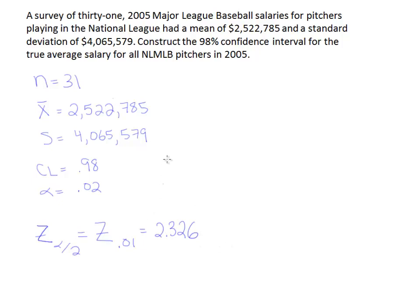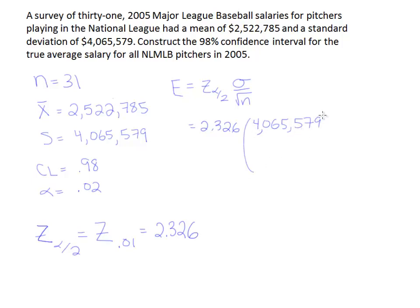We'll take that value and plug it into our margin of error formula. The margin of error is Z alpha divided by 2 times sigma over the square root of n. In this case, Z alpha over 2 is 2.326. We'll substitute S for sigma, using 4,065,579, and divide by the square root of n, which is the square root of 31.